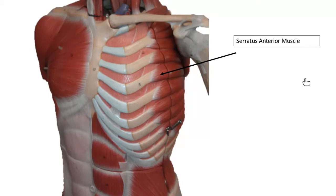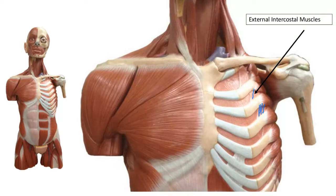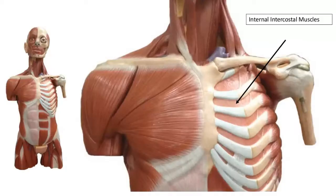You probably noticed we have muscles in between the ribs. The external intercostal muscles — whose fibers go down and in similar to the external obliques — are located more laterally between the ribs. The internal intercostal muscles — whose fibers go up and in like the internal oblique — are located more medially between the ribs.